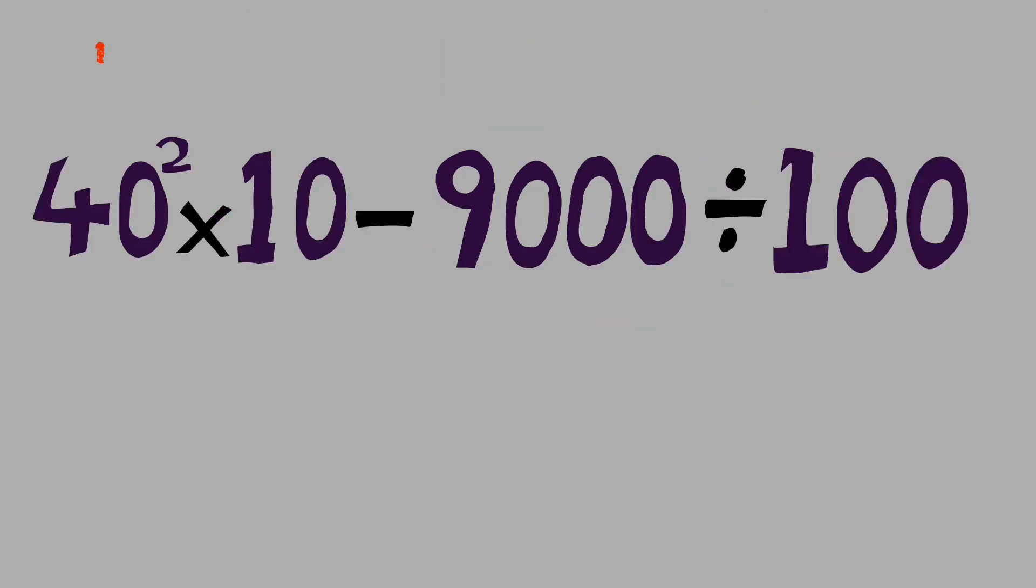Here we have 40 squared, so 40 times 40 times 10, well that's going to equal 16,000. Then 9000 divided by 100, well that equals 90. So 16,000 take away 90: 15,910.